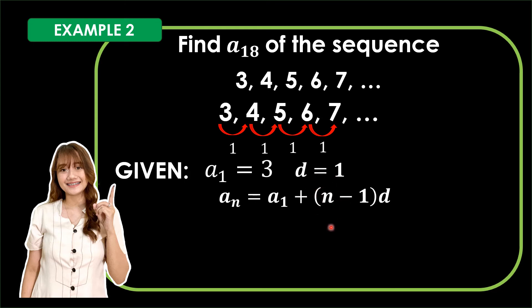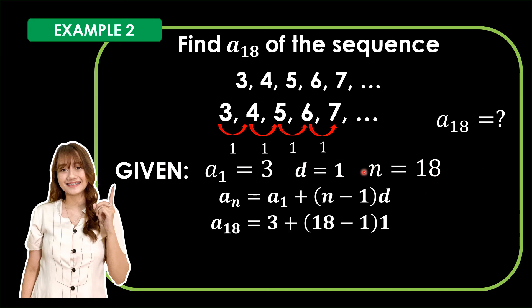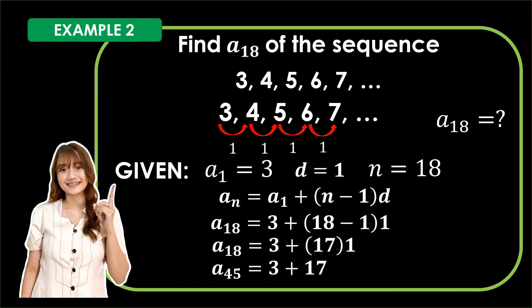Now let us determine the term's location. In our problem, it asks for a sub 18. Thus, our term's location is 18. We now have: first term is 3, common difference is 1, and term's location is 18. Substituting these values into our formula: a sub 18 is equal to 3 plus the quantity 18 minus 1 times 1. We know that 18 minus 1 is 17, and 17 times 1 is 17. Add 3 to 17 and we get 20. Thus, our 18th term of the sequence 3, 4, 5, 6, 7 is 20.